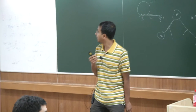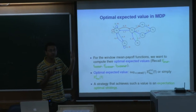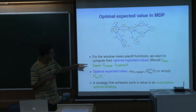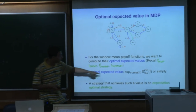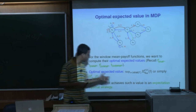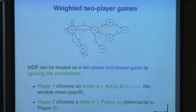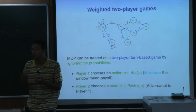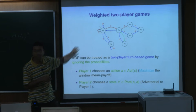The optimal expected value in an MDP is defined as follows: once a strategy is chosen we have a Markov chain and an expected value. The optimal expected value for a given function is the supremum over all strategies of the expected value; the corresponding strategy is called expectation-optimal. An MDP can also be viewed as a weighted two-player game where we ignore probabilities — player one chooses an action and player two determines the next state — similar to the two-player games seen earlier but with a different representation.